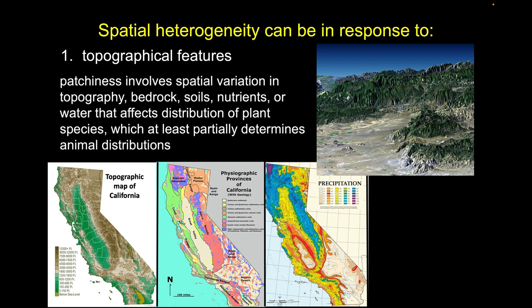Then on top of that, both those things come together to produce both the pattern of precipitation along with our atmosphere, and also how well these soils retain water. When we add all that together, we get even more variation in water holding capacity and the routine amount of water contained in the soils — which will have a strong influence on the type of vegetation that can grow there.